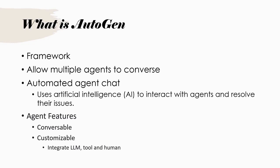The major features of the agent are: they are conversable, meaning one agent can talk to another, and they are customizable. You can integrate it with the LLM and various tools. You can also have one end of the agent as just another human. All these are possible in Autogen.